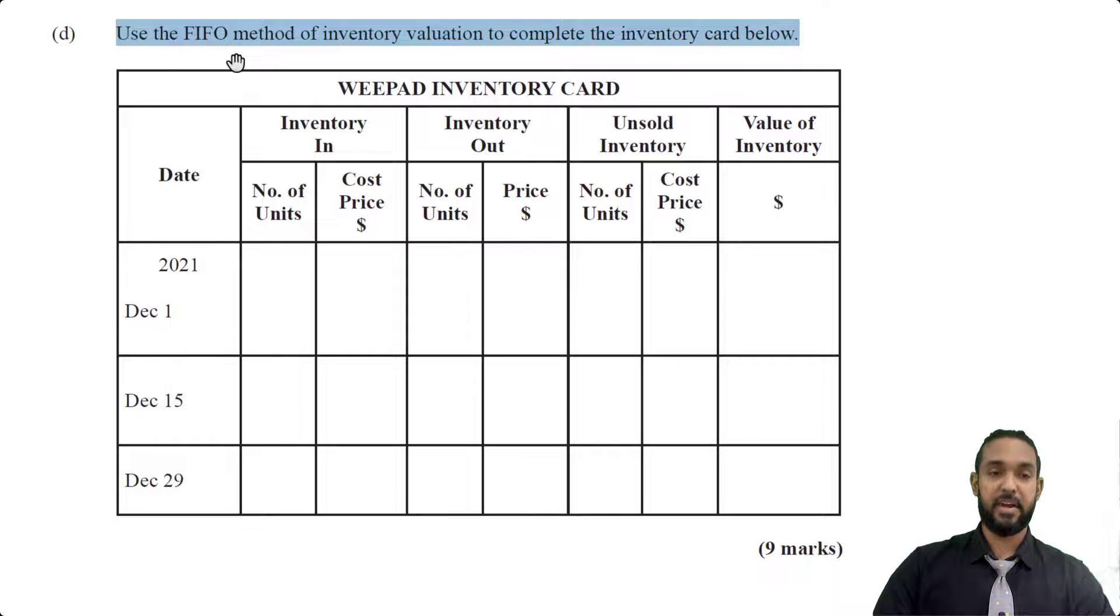So it says, use the FIFO method, first in first out method of inventory valuation to complete the inventory card below. So if you need to go through how to do stock valuation, I'm going to put a card up there and a link in the description below to my stock valuation videos. So be sure to check that out if you need to. Now we have Weepad inventory card, date, so the dates are across here. Now I'm seeing a bit of a discrepancy. It says December 29th here, but I feel it meaning 19th, because that was the date that gave us back up in the information above.